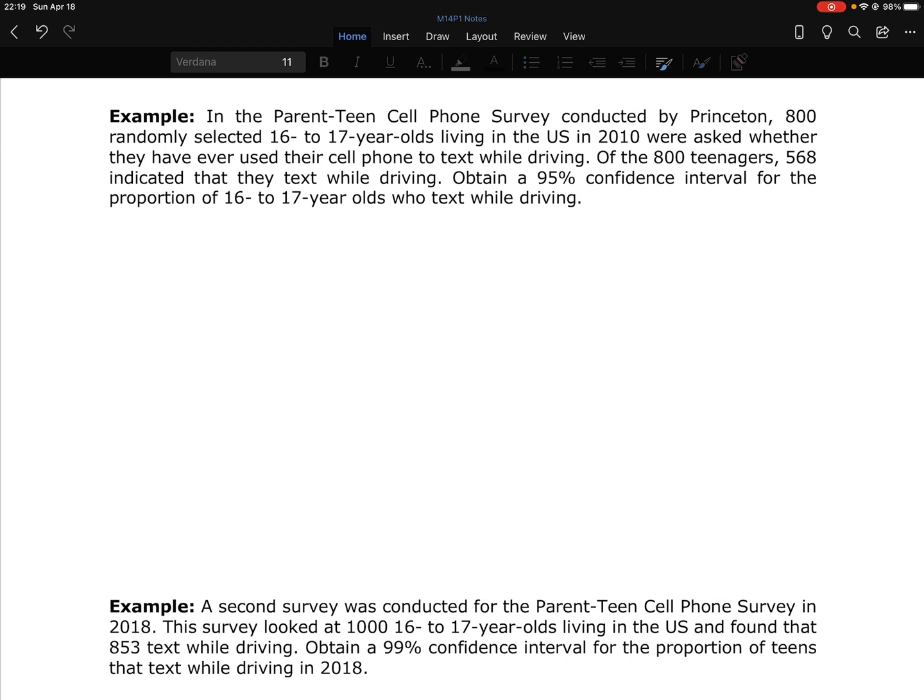First example, in the parent-teen cell phone survey conducted by Princeton, 800 randomly selected 16 to 17 year olds living in the U.S. in 2010 were asked whether they have ever used their cell phone to text while driving. Of the 800 teenagers, 568 indicated that they text while driving. Obtain a 95% confidence interval for the proportion of 16 to 17 year olds who text while driving.